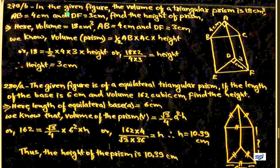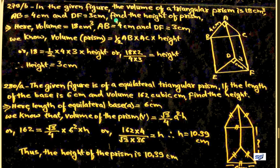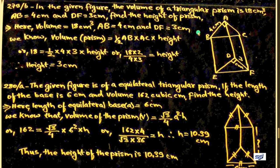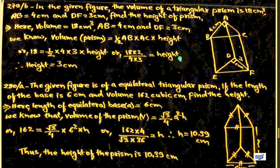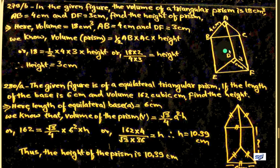Question 279b: volume of triangular prism = 18 cm cubed, AB = 4 cm, DF = 3 cm. Find the height. Volume = half into AB into DF into height. So 18 = half into 4 into 3 into height. Therefore height = 18 into 2 upon (4 into 3) = 3 cm.